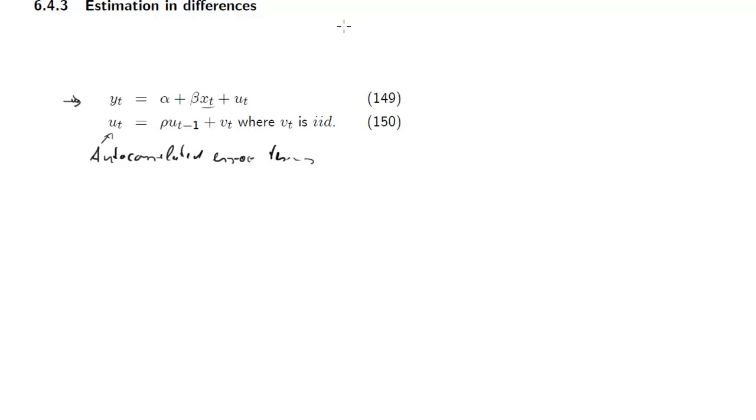Now a common situation is that you estimate a model like 149 and you find strong autocorrelation in your estimated error terms, the u hat t's. So if you find that, then a common recommendation or common strategy is to estimate 149...